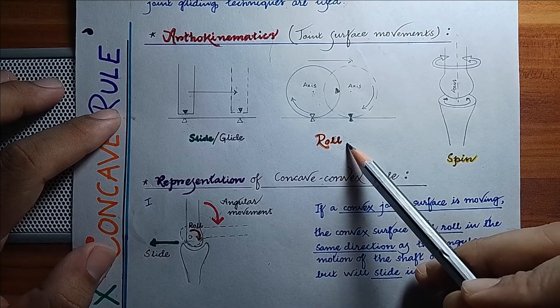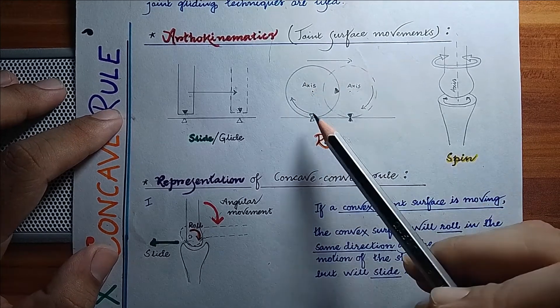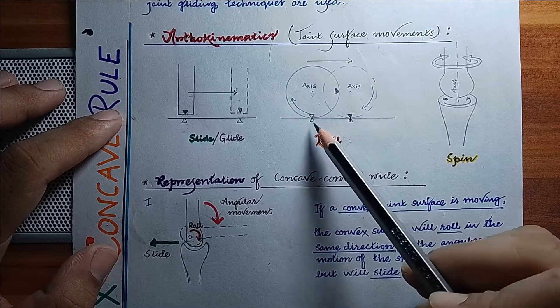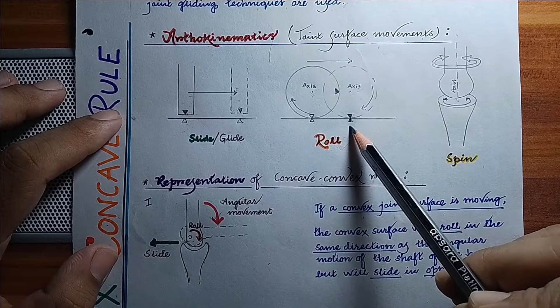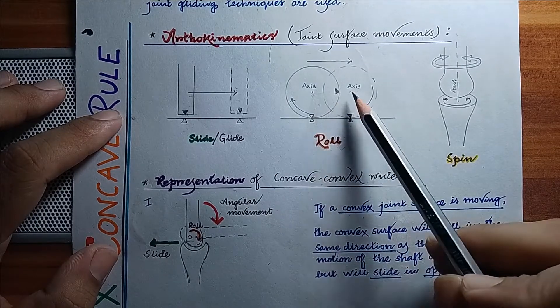The axis of rotation is also moved here. In this case, the axis is moved to the right. The third joint surface movement is called spin.